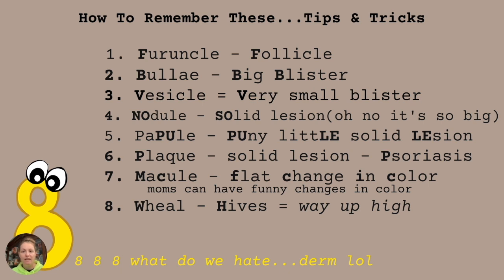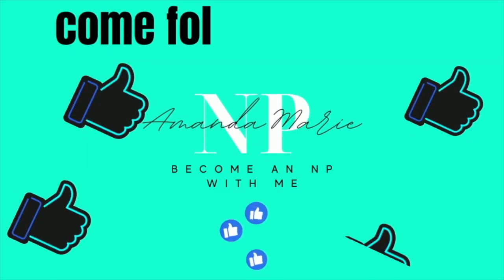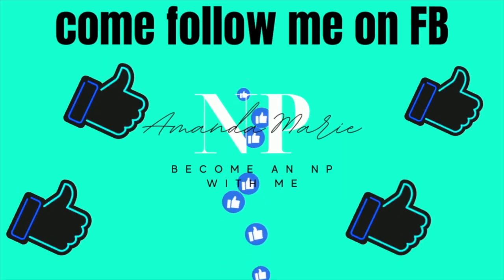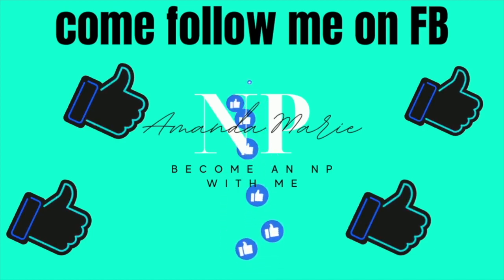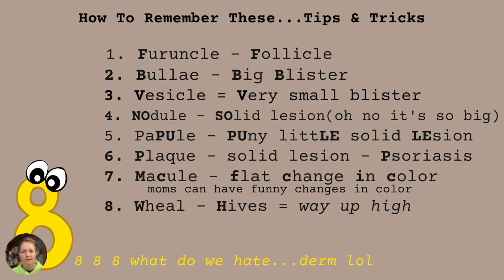So we mainly have two fluid-filled lesions: the bullae and the vesicle. B for big, V for very small. Then nodule is solid, papule is solid. And then plaque — you're instantly going to think P for psoriasis, plaque psoriasis, and we know what that looks like. That's a solid lesion.